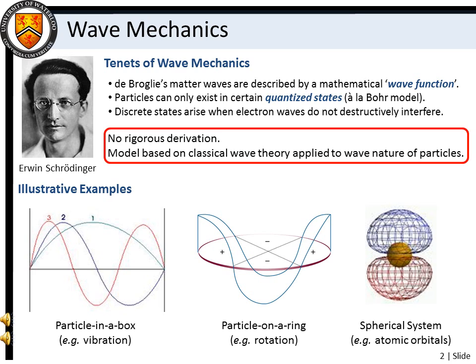Schrödinger's formulation uses classical wave theory to describe the wave-like natures of particles with a wave function. Discrete quantum states arise when matter waves constructively interfere to produce a standing wave pattern. In this way, particles can only exist in certain quantized states.